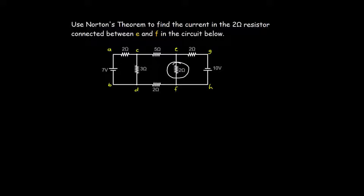The principle of the superposition theorem is that we are going to consider each of the voltage sources acting alone, then calculate the short-circuit current. After that, we take the algebraic sum of the values of the short-circuit current that we get, and that will give us Norton's current.